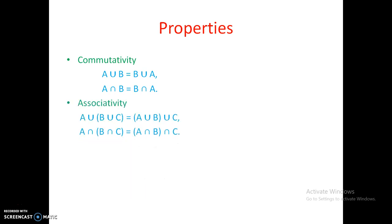Next is associativity. In associativity, A union (B union C) is equal to (A union B) union C. The same thing happens for intersection as well. If you draw the Venn diagram, you will get the same area on the left side and the right side, so we can say these two are the same.